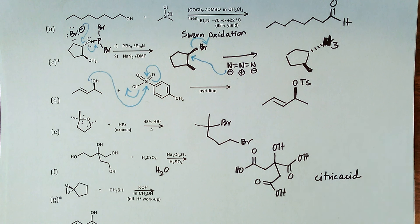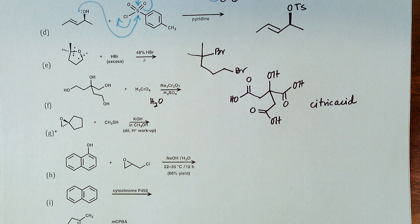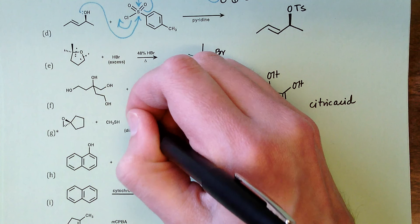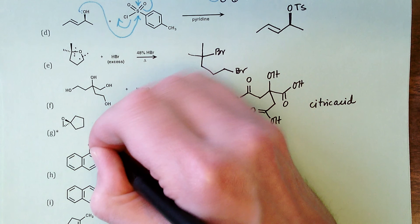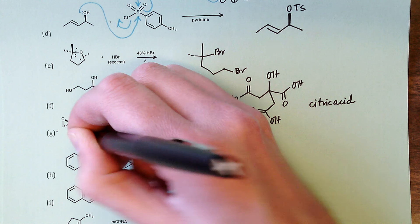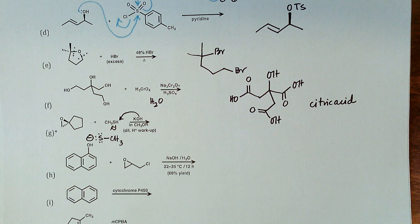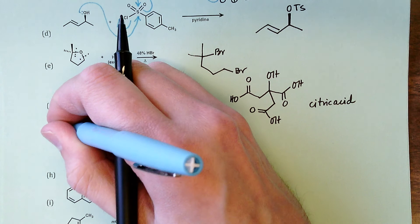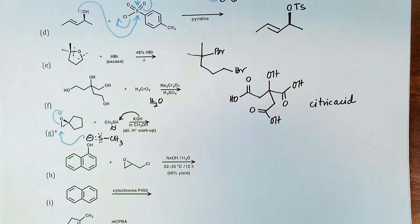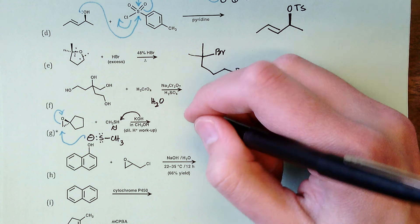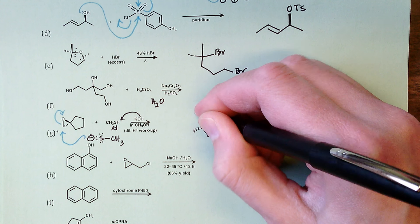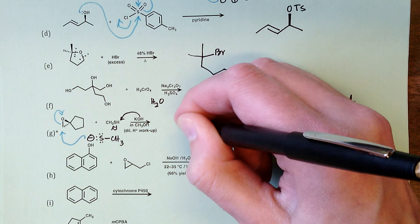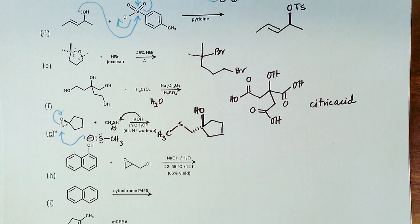Part g: methanethiol (pKa ~11) dissolved in methanol with potassium hydroxide. The first event is an acid-base reaction between hydroxide and methanethiol to generate potassium methanethiolate. Negatively charged sulfur atoms are champion nucleophiles. For epoxide opening, negatively charged and neutral nucleophiles attack the less substituted carbon. After acidic workup, we get the tertiary alcohol and a new sulfur-carbon bond — forming the thioether.